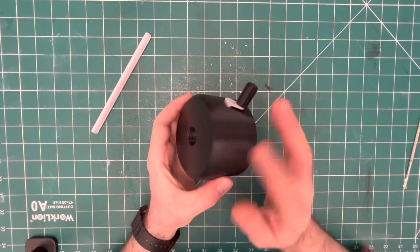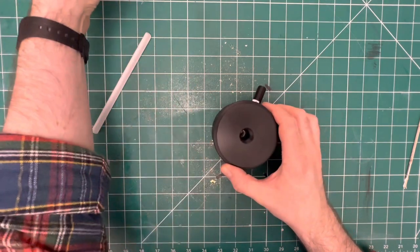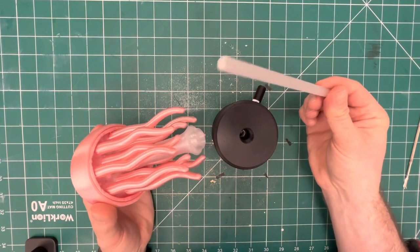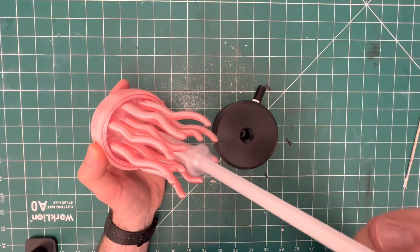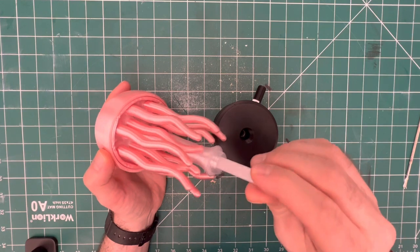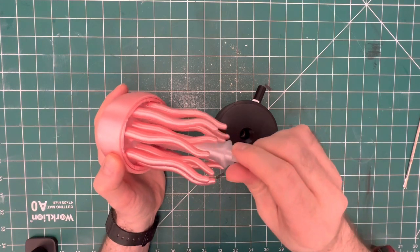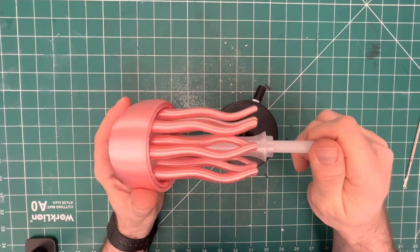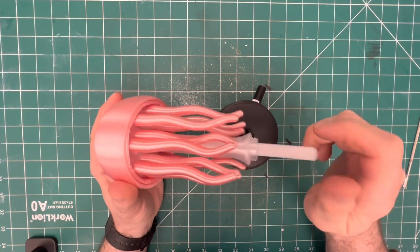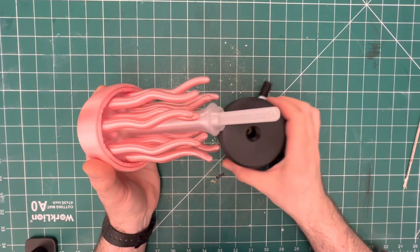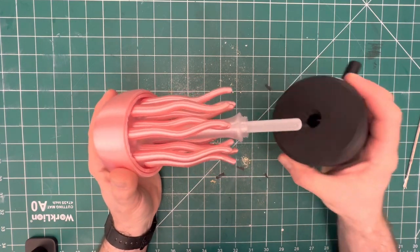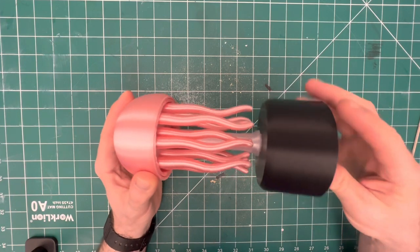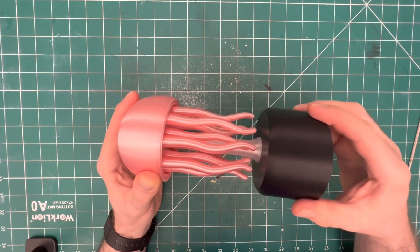Now this axle here is going to press right up into the center of our potato masher and interface with that yellow gear that's inside. And we can see how when we turn that, the tentacles wiggle. Cool, right? So this will just press right down into the base and screw on like that.